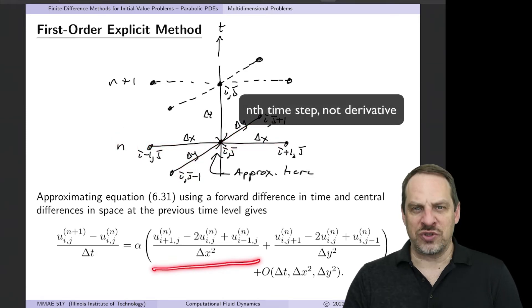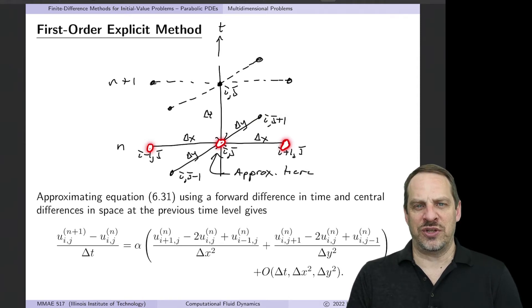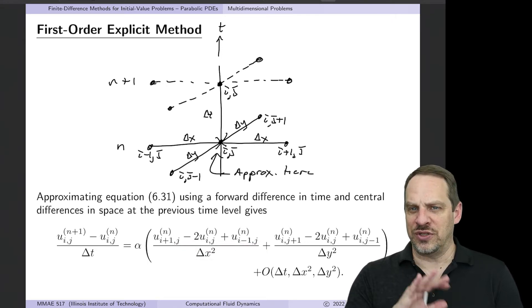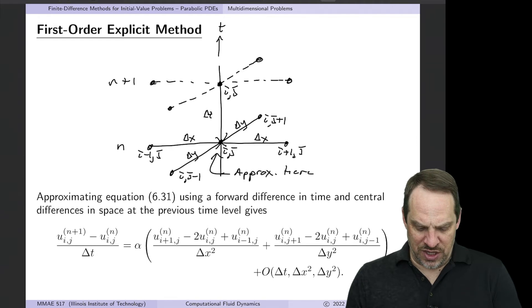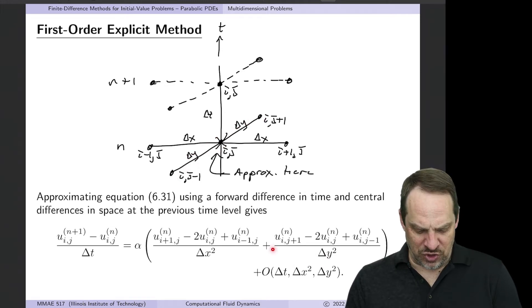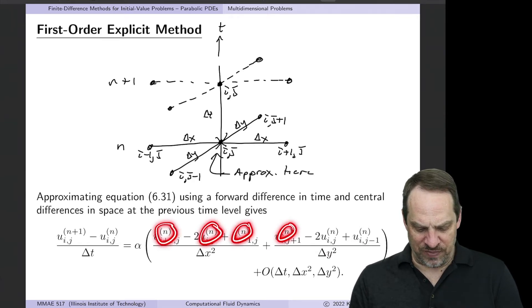So on the right-hand side, we have the partial squared u partial x squared, so that's going to involve these three points. We use a second-order accurate central difference approximation. So one ui plus one j minus two uij plus ui minus one j over delta x squared. Just as we saw in the elliptic case. And then for the partial squared u partial y squared term, we'll do the same thing, but now in the y direction. So involving these three points. So uij plus one, uij, and ij minus one, with the one minus two, one coefficients.